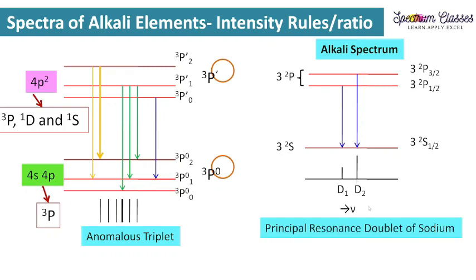Since here you are having two lines you can say doublet easily, but here you are having six lines and you are saying it triplet. Actually this triplet and this doublet don't relate to the number of lines — they are related to the spin multiplicity as you can see here. So here we are having triplet to triplet transitions and here we are having doublet to doublet transitions. That is why we are calling it doublet and we are calling it triplet.